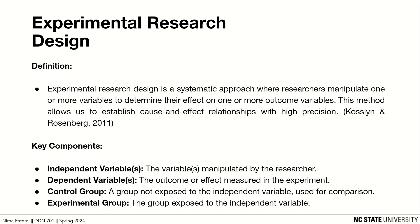Achieving both internal and external validity can present a tricky balance. Tightly controlling variables to maximize internal validity may result in artificial conditions that limit the generalizability of findings to the real world, compromising external validity. Conversely, prioritizing the realism of study conditions to enhance external validity may introduce confounding variables that undermine internal validity.